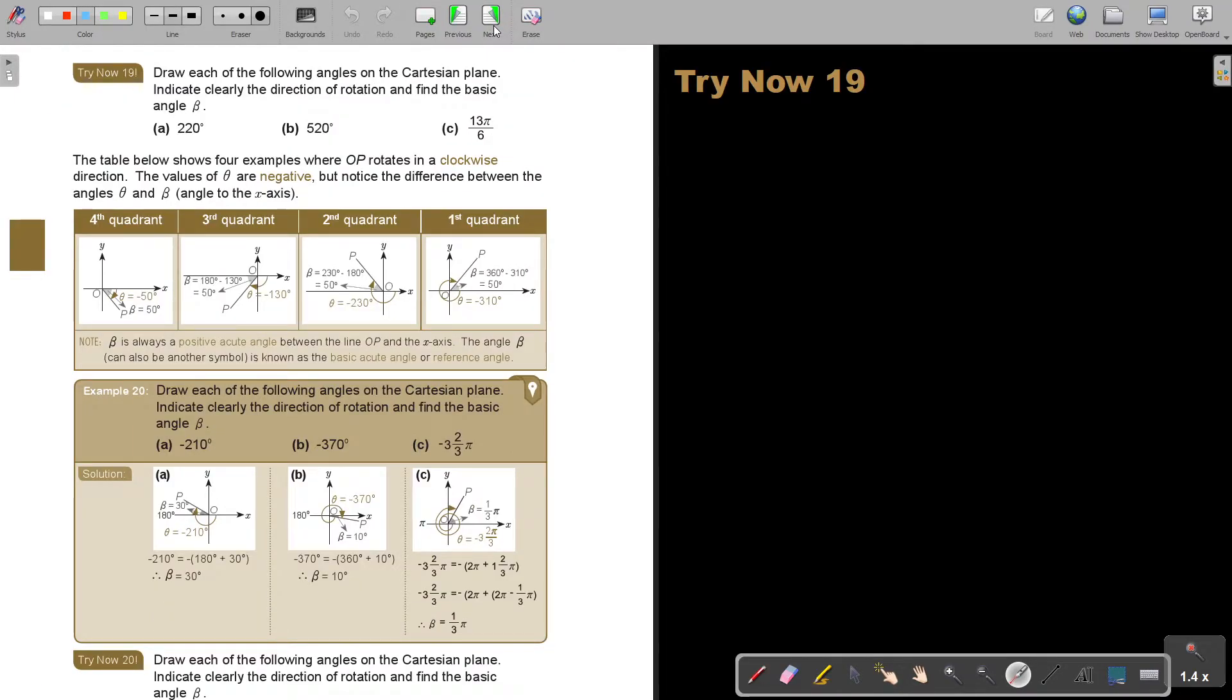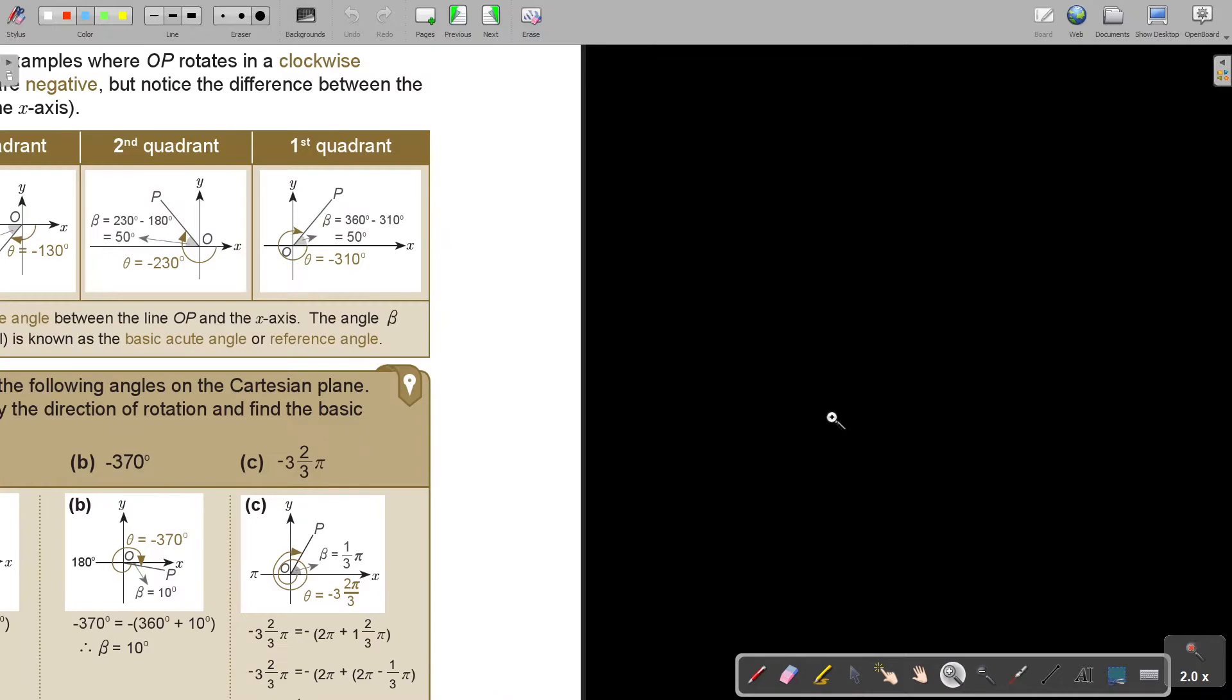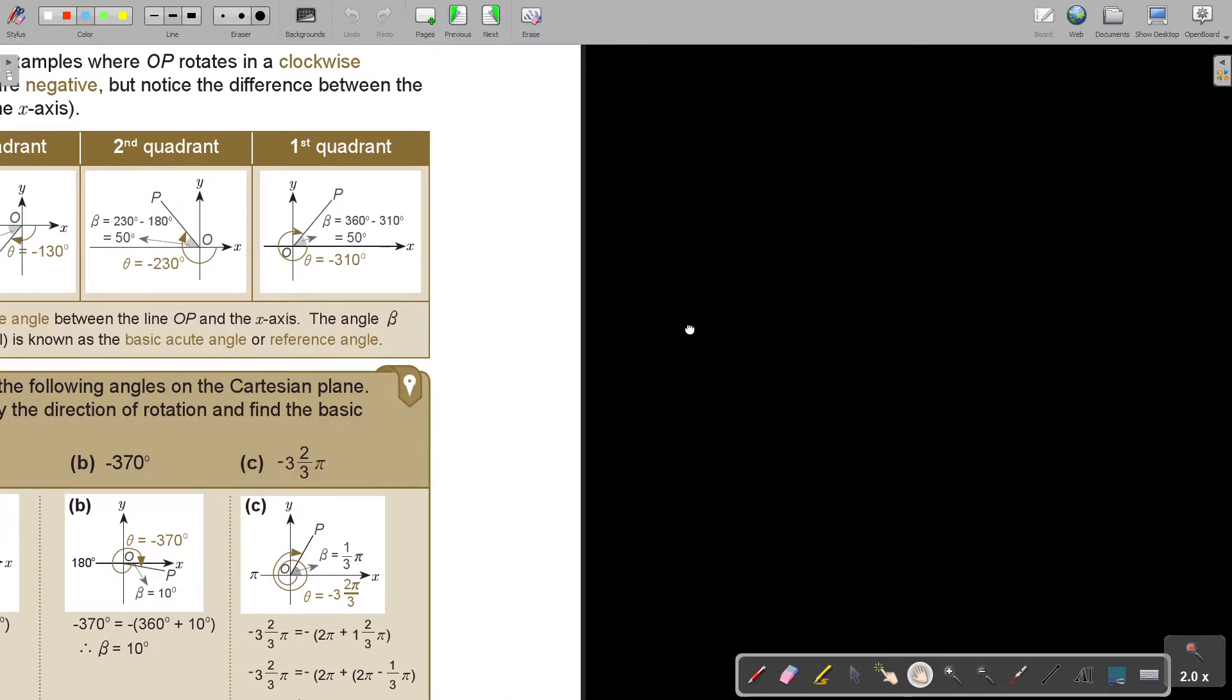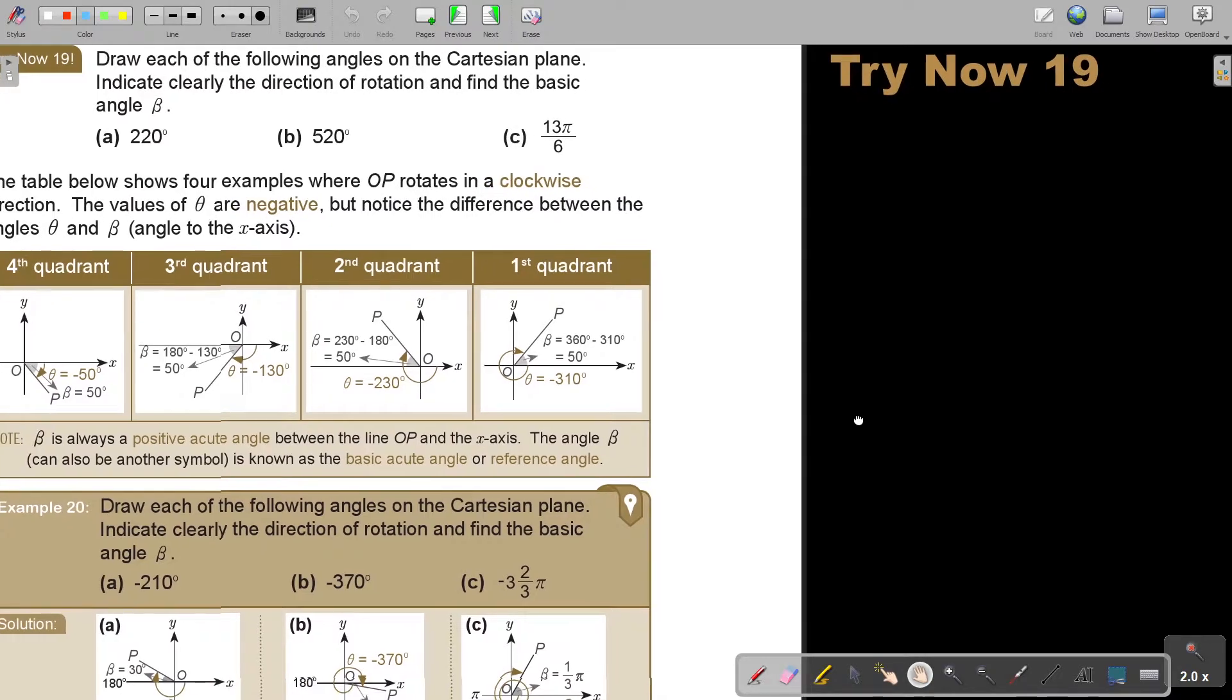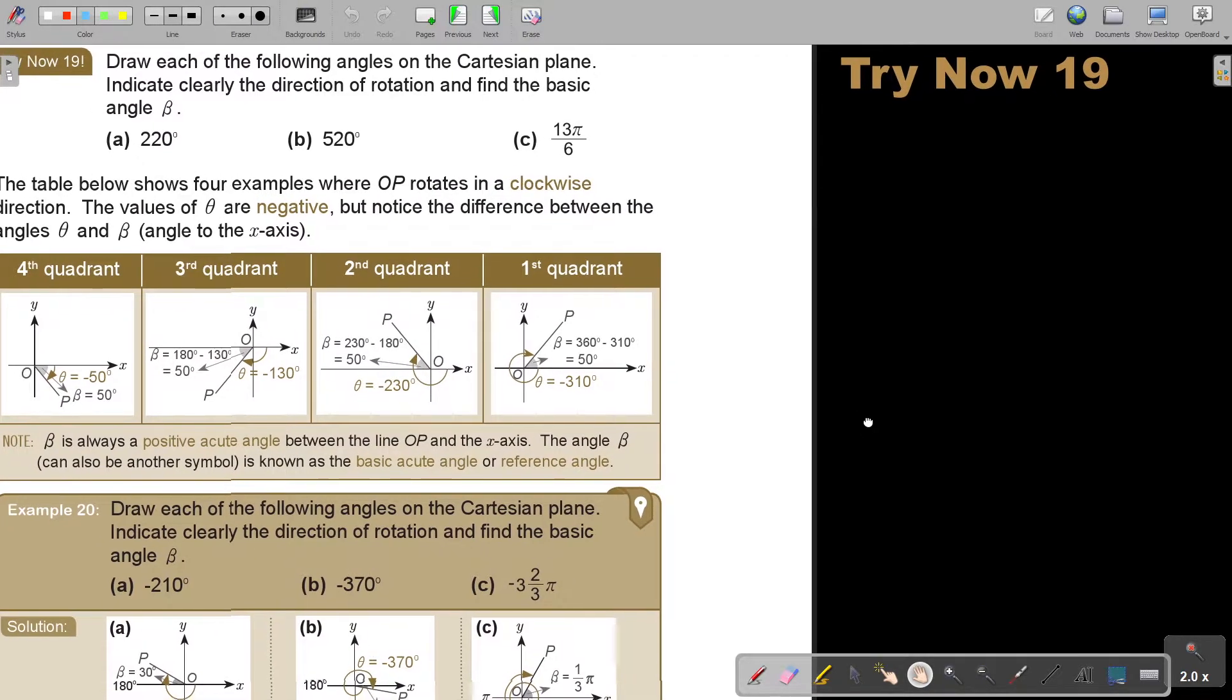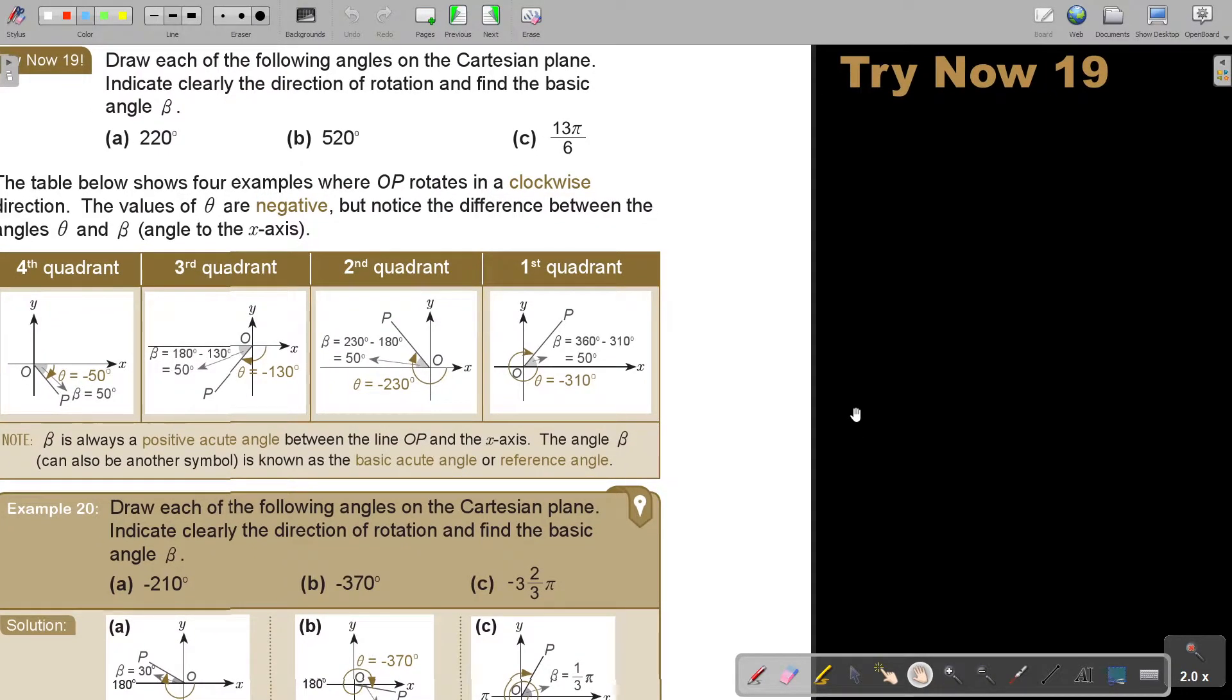I want you to stop the video, and I'm going to make it a bit bigger, let you see better. And I want you just to do try now 19. I think do all three, because in this case, it will be all different. This is more than a revolution. This is in terms of radians. But let's start.